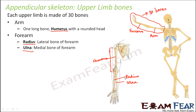The proximal part of the radius articulates with the humerus, while the distal part is connected to the wrist bone. For ulna, the beginning part starts from the elbow — you can press your elbow and locate it. The bone on the lateral side connected to the upper humerus bone is the radius. These two bones form the forearm.